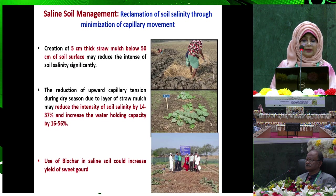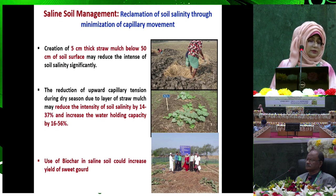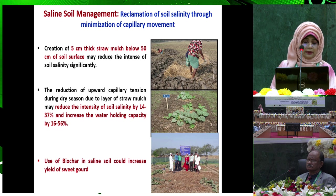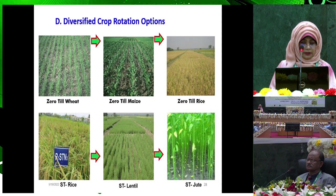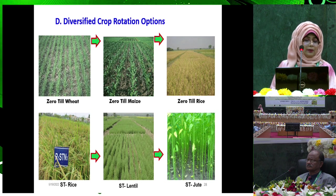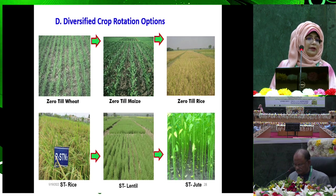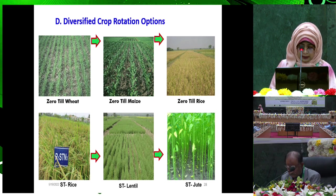For saline soil management, reclamation of soil salinity through minimization of capillary movement uses mulch and also biochar in saline soil. It protects against salinity. Diversified crop rotation: if we use diversified crops in sequenced rotation throughout the year, the field is almost constantly occupied by crops and no carbon dioxide emission occurs.